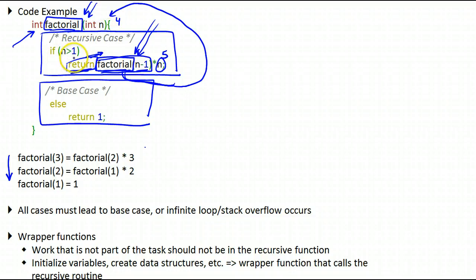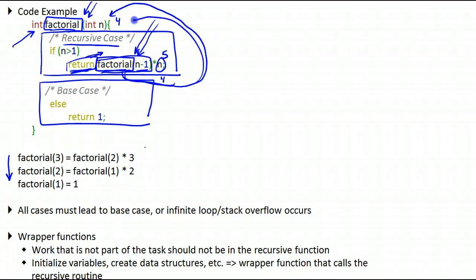4 would come in and ask the same question: is 4 larger than 1? It is, so we're still in the recursive case. We would have another state where n is 4, and it would call factorial again on 4 minus 1, which is 3. So we'd call it again on 3, and so on and so forth, continuing to reduce n.